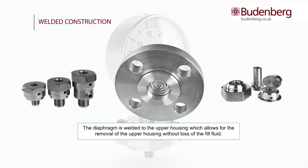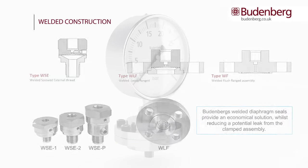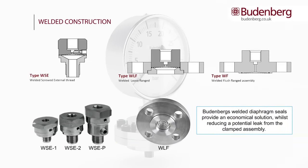Typically, diaphragm seals are available as clamped or welded construction. Welded constructions are available with a screwed, flanged or hygienic connection. The diaphragm is fusion welded to both the upper and lower chambers, or to the lower connection for flanged or hygienic type. The materials of construction are all the same — either stainless steel, Monel, Hastelloy or tantalum. Budenberg's welded diaphragm seals provide an economical solution whilst reducing a potential leak from the clamped assembly. Welded diaphragms cannot be replaced but can be cleaned. Most of the options for configuration that apply to the clamped versions also apply, unless dissimilar metals are used for the top and bottom.